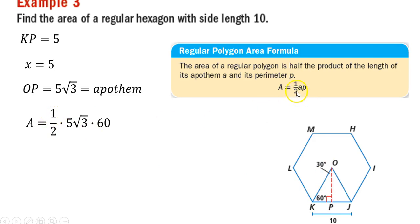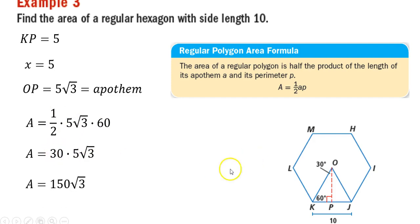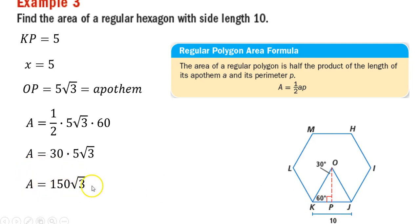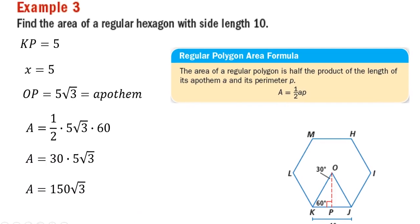Now it's one half from the formula for the area of a regular polygon. So one half times 5 times the square root of 3 times 60 simplifies to 30 times 5 times the square root of 3, because one half times 60 is 30. And that equals 150 times the square root of 3, because 30 times 5 is 150. So the area of this regular hexagon with a side length of 10 is 150 times the square root of 3.